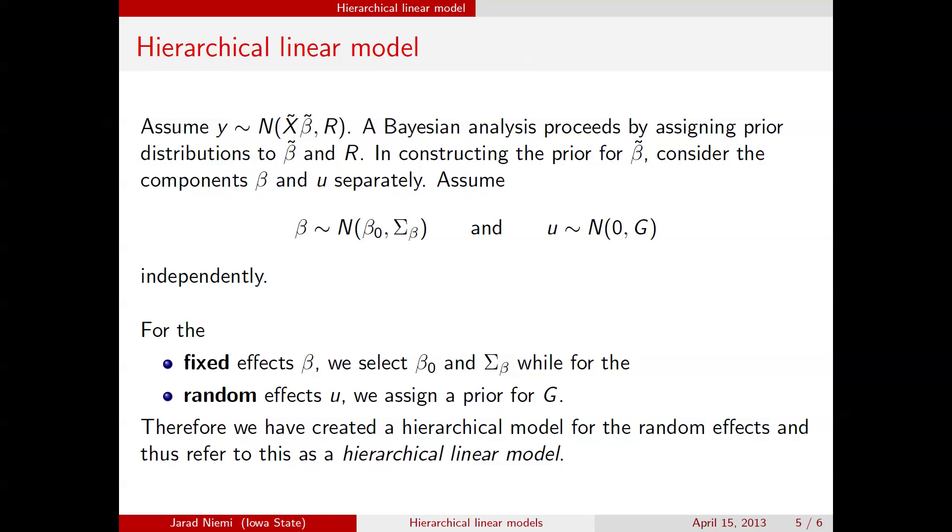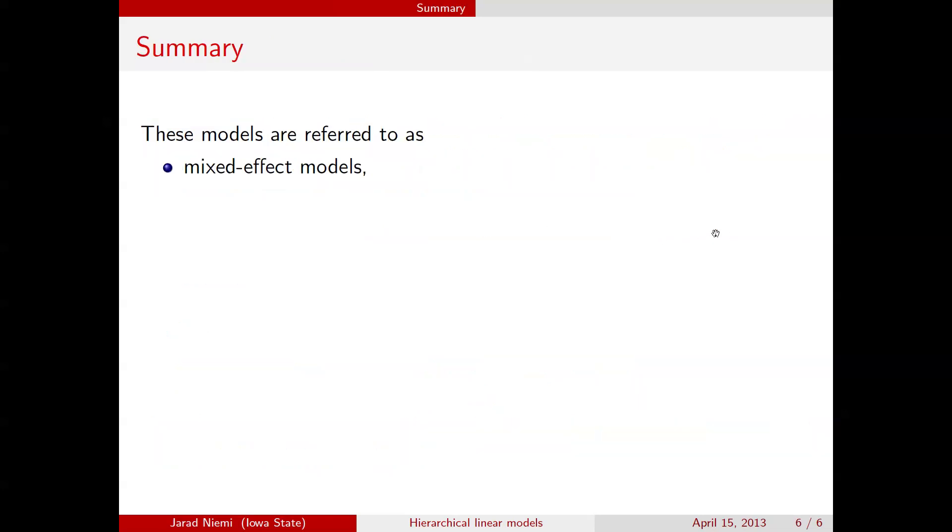So this is the big main slide of the whole mini-lecture, is just how a Bayesian thinks about fixed versus random effects, considering we treat every unknown in the model as being random. The key is fixed effects have a prior that's assigned, whereas random effects, the prior is learned by putting a hyper-prior on the variance-covariance matrix here.